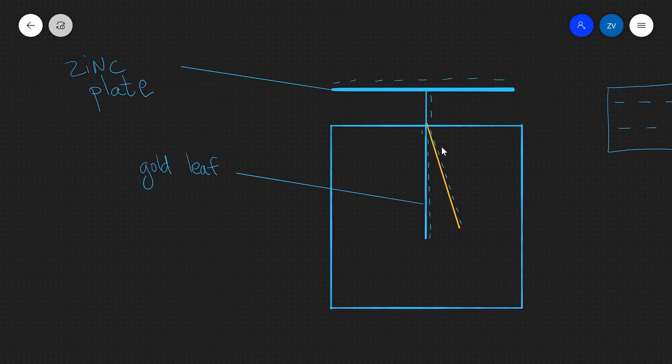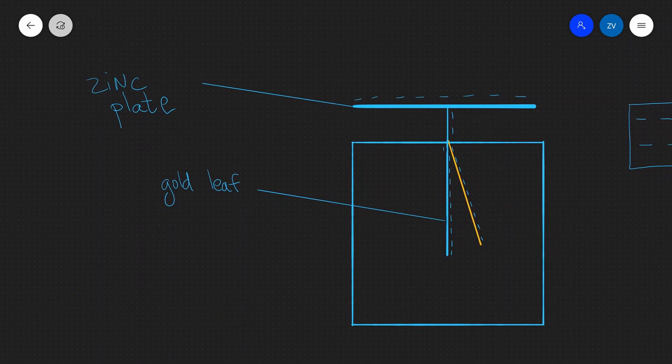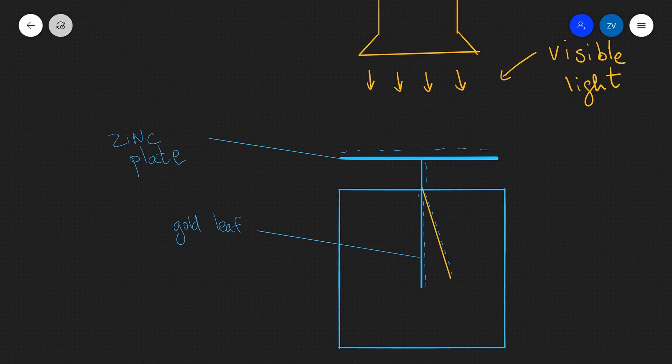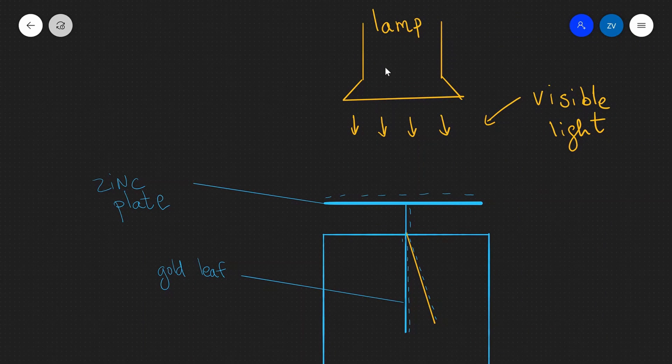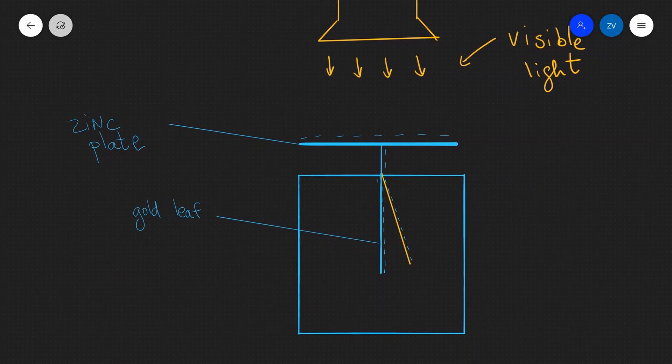Now let's see what happens if we were to shine some light onto the gold leaf electroscope. Well let's shine some visible light onto the gold leaf electroscope. So we bring a lamp, just normal standard lamp, and we shine it onto the zinc plate. What happens then? Well the answer is absolutely nothing. The gold leaf stays absolutely put.